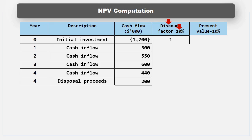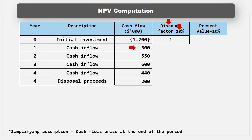Also, to enable us to do discounting calculations, we have to make a simplifying assumption about the timing of cash flows. We need to assume that cash flows that arise over a period of time arrive at the end of that period. So, for example, the Year 1 cash flows of $300,000 may well arise evenly over that first year, but we'll assume that it all arrives in one go at the end of that year, at T1.